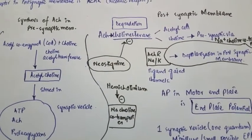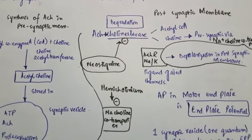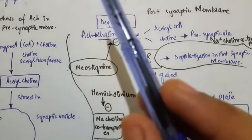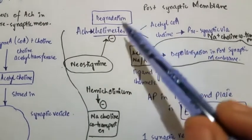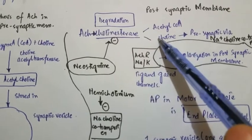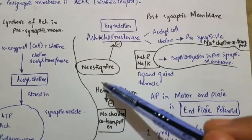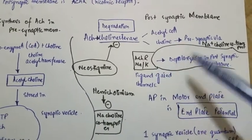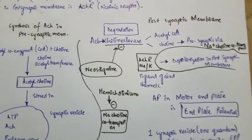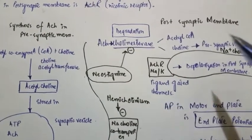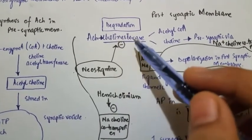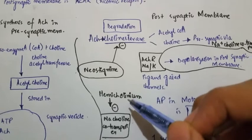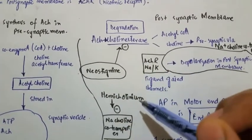After use, acetylcholine is degraded into acetate and choline by the enzyme cholinesterase. The choline is transported back to the presynaptic membrane via the sodium-choline co-transporter and is reused in the formation of acetylcholine. Neostigmine is a drug that inhibits cholinesterase, and the sodium-choline co-transporter can be inhibited by the drug hemicholinium.